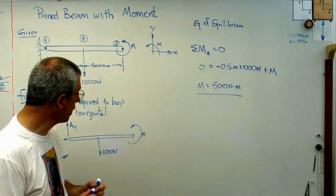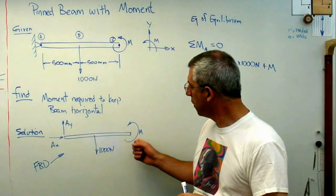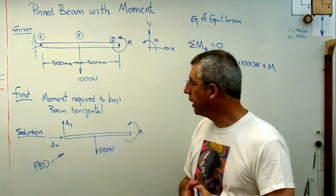So it turns out that if I apply, let me get out of your way here, if I apply a moment of 500 newton meters at this right end, this beam will stay horizontal.